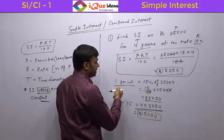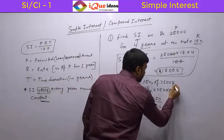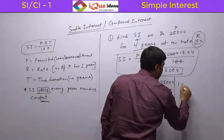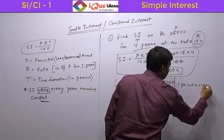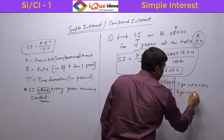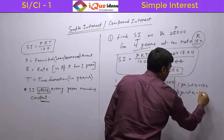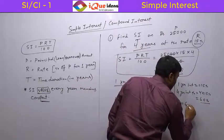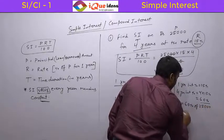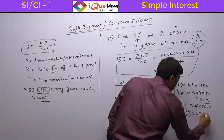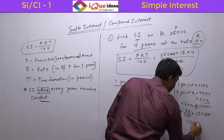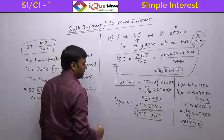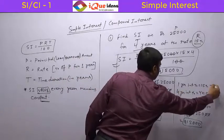There is one more way of looking at it. The rate is 15 percent, meaning one year interest in terms of percentage is 15 percent. So 4 year interest in terms of percentage will be 4 × 15 = 60 percent of the principal amount, which is 60 percent of 25,000 = 60/100 × 25,000. So there are three different methods: the direct formula method, the one year interest value method, and the percentage of one year interest method.